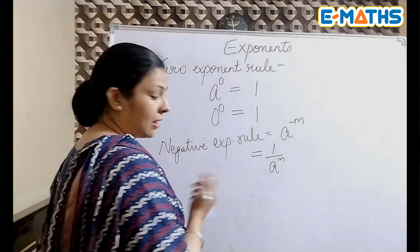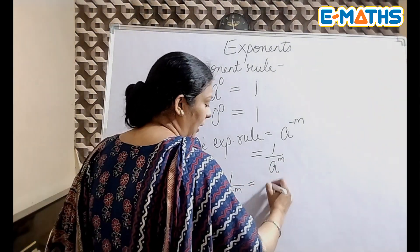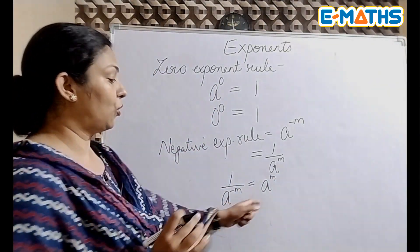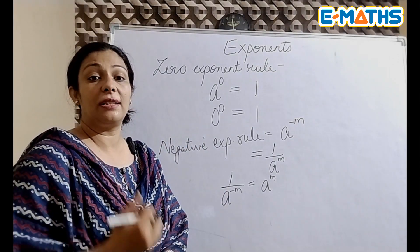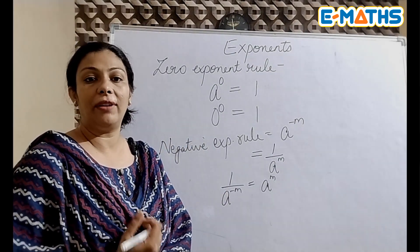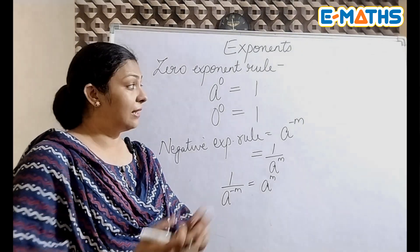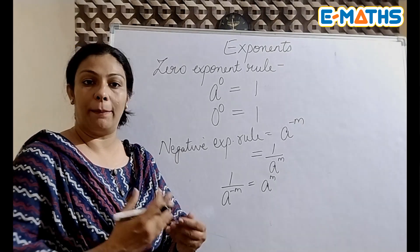Zero exponent rule means if any term has a power zero, it can be a number or variable or anything, if it has a power zero the value will always be one. Even if it is zero having a power zero, the answer will be one to it.